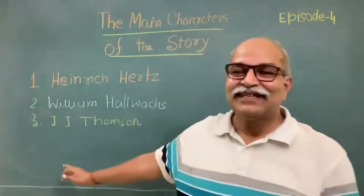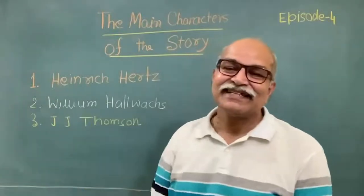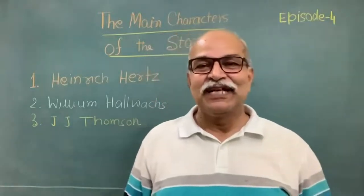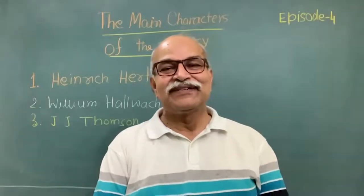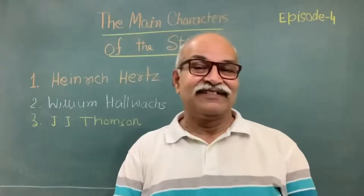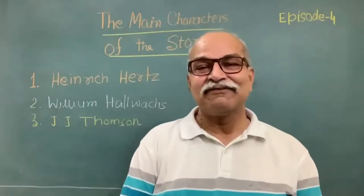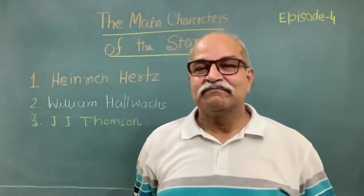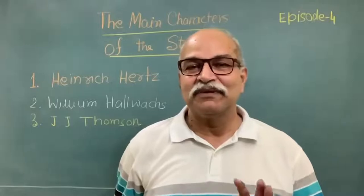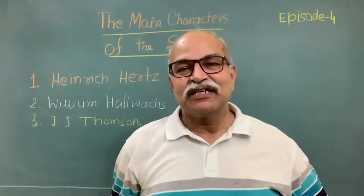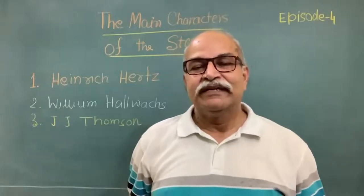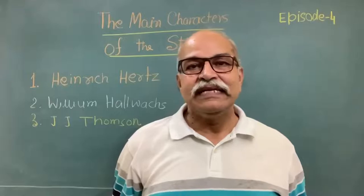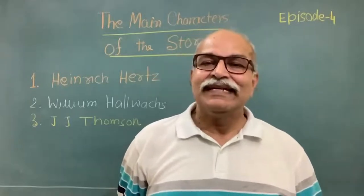JJ Thomson is such a big name — everyone knows it, not only science students but even a general audience. He was the person who discovered the electron, and that was in the year 1897. Before that, the atom was considered the final smallest unit and people believed there was no subdivision of it. But then a series of experiments by JJ Thomson followed.